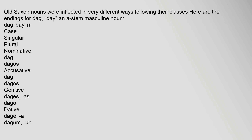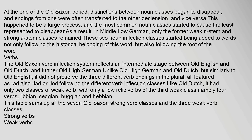Old Saxon nouns were inflected in very different ways following their classes. For example, the endings for 'dag' (day), an a-stem masculine noun: singular nominative 'dag,' accusative 'dag,' genitive 'dages,' dative 'daga'; plural nominative 'dagos,' accusative 'dagos,' genitive 'dago,' dative 'dagum.' At the end of the Old Saxon period, distinctions between noun classes began to disappear, and endings from one were often transferred to the other declension. In Middle Low German, only the former weak n-stem and strong a-stem classes remained.